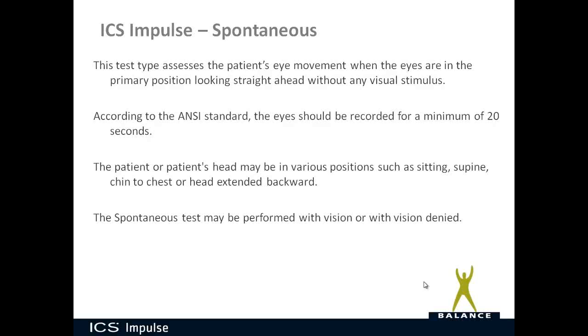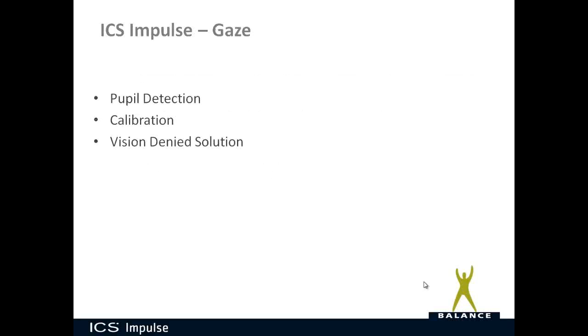The patient's head may be in various positions such as sitting, supine, chin to chest, or head extended backward. In this video we're not going to go through the whole pupil detection, calibration, and vision denied solution. Those can be found in other videos that specifically talk about setting the pupil detection, calibrating the patient, and how to use the vision denied solution.